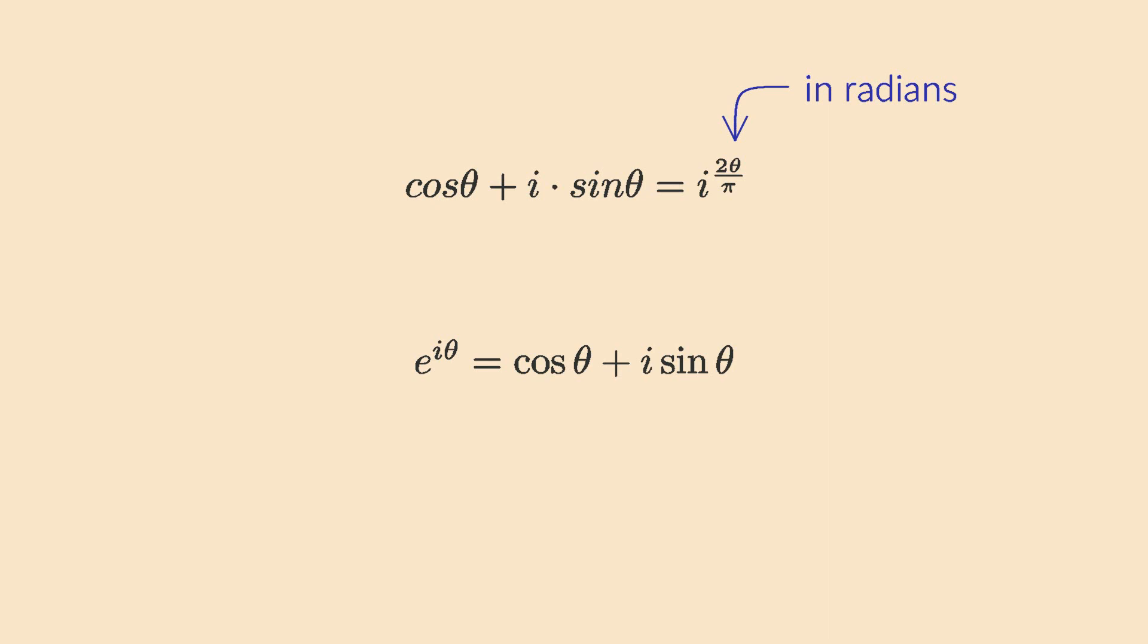So instead of powers of i, mathematicians use the famous e to the i times theta, known as Euler's formula. The main goal of this video is to explore where this formula comes from and how we can interpret it geometrically. I mean, think about how weird this is. Raising something to an imaginary power? What on earth could that possibly mean? But also, just look at how elegant this formula is. We can just plug our angle in radians into the exponent and we're done. We don't need a factor like 2 over pi to convert it from radians into something else. Euler's formula is simple and perfect.